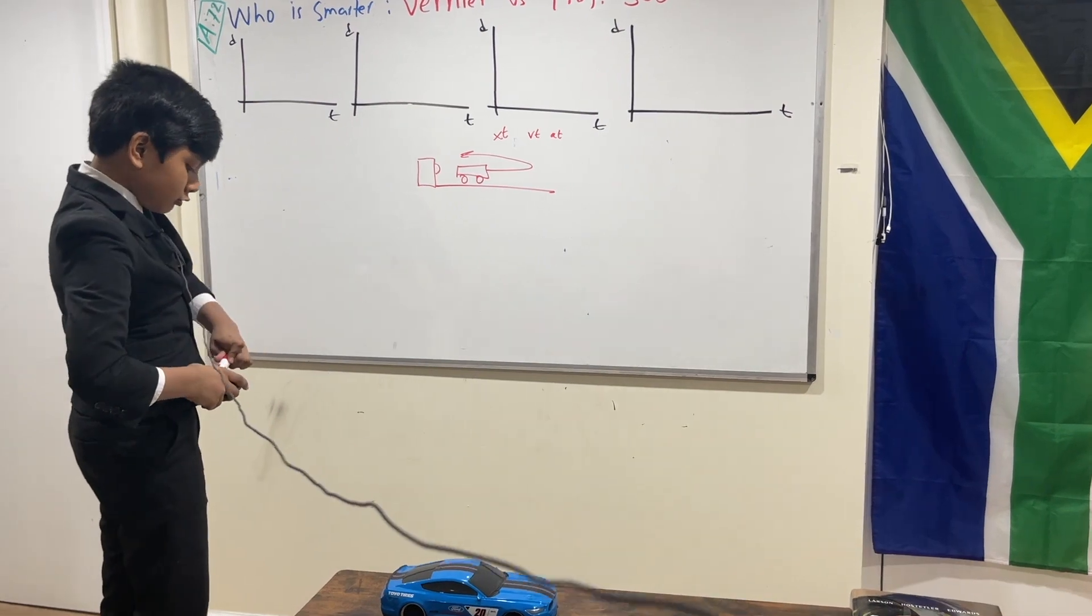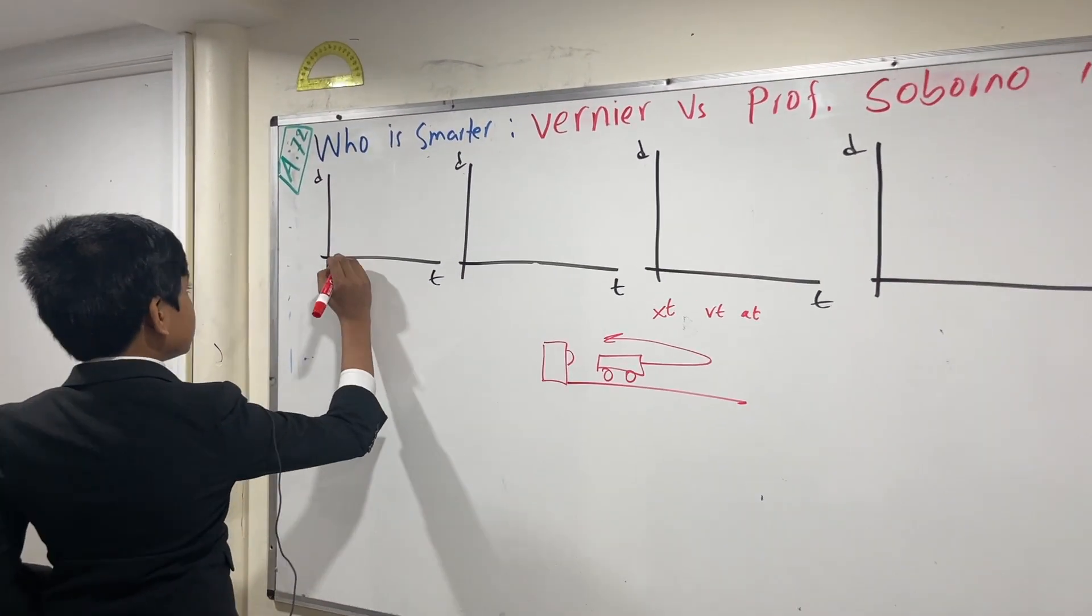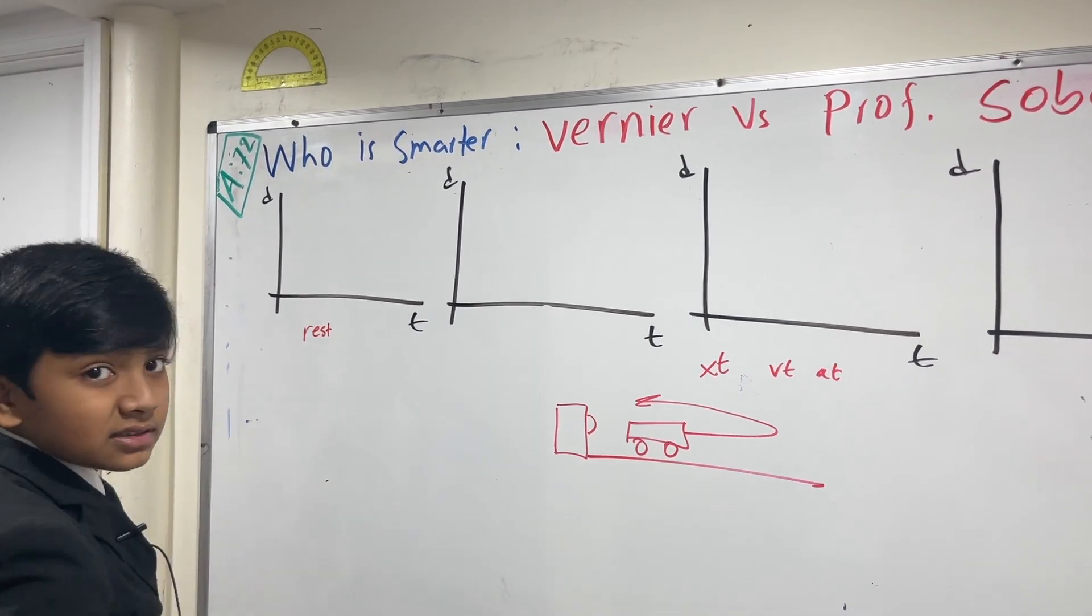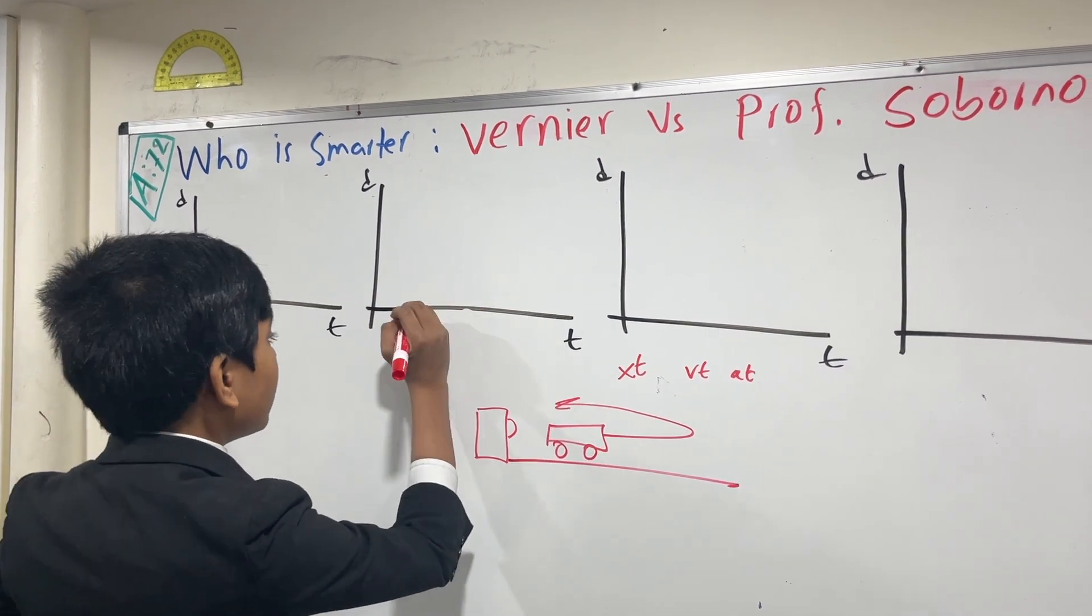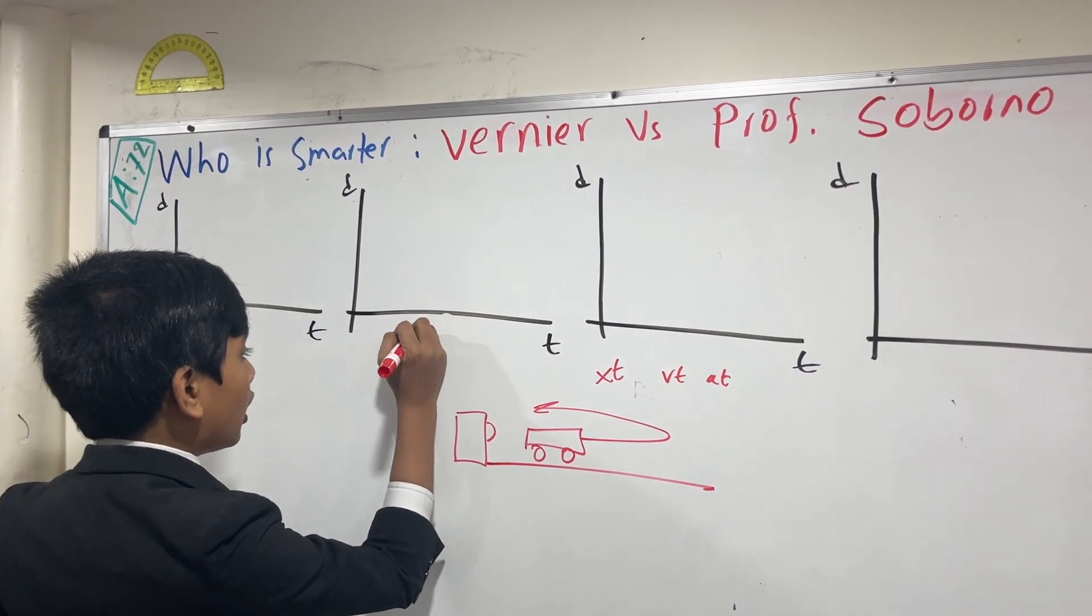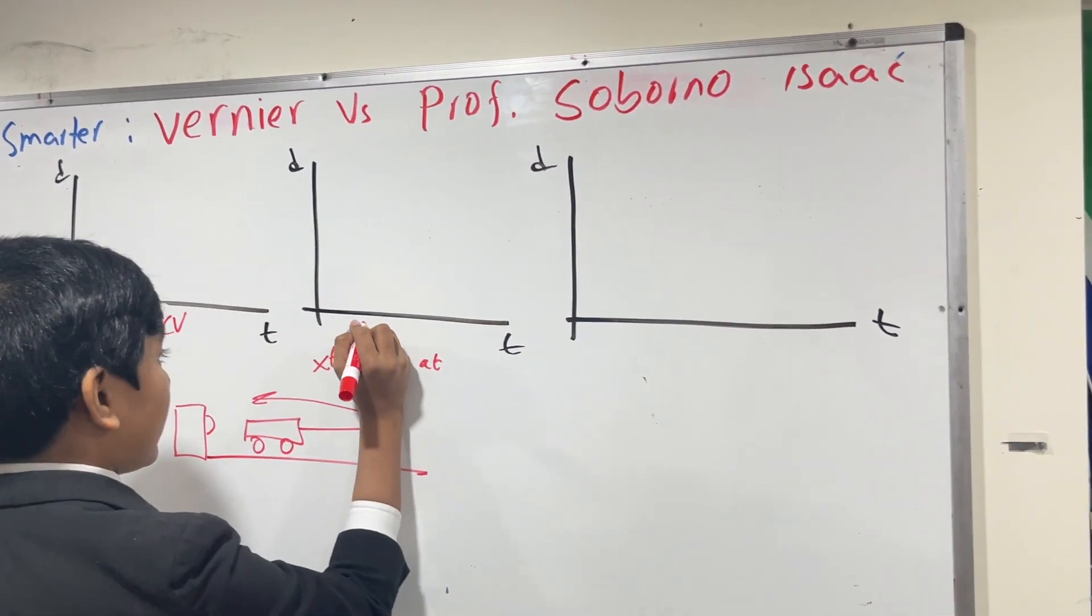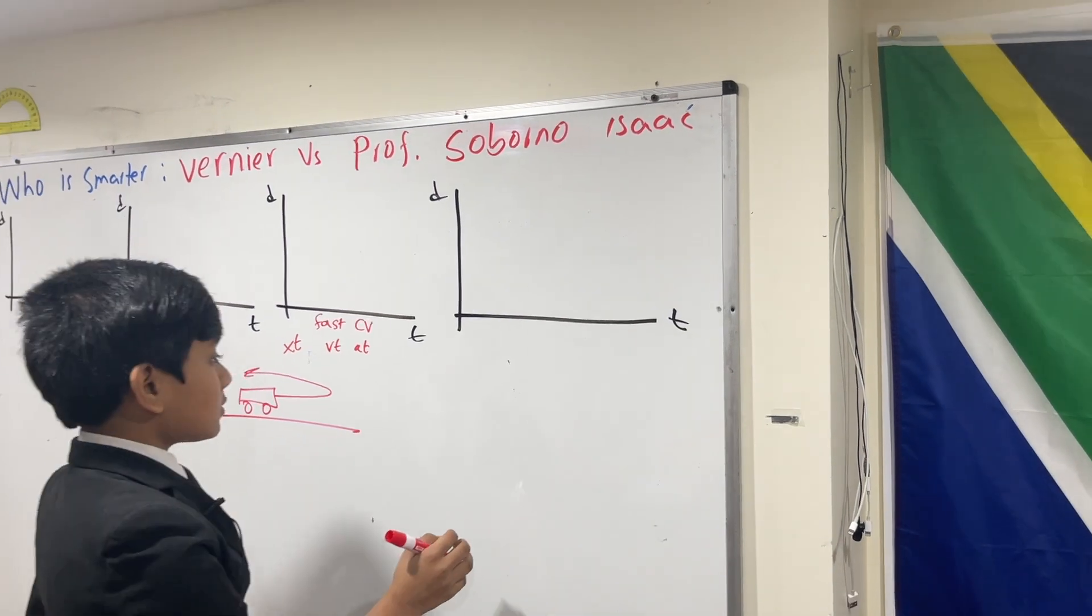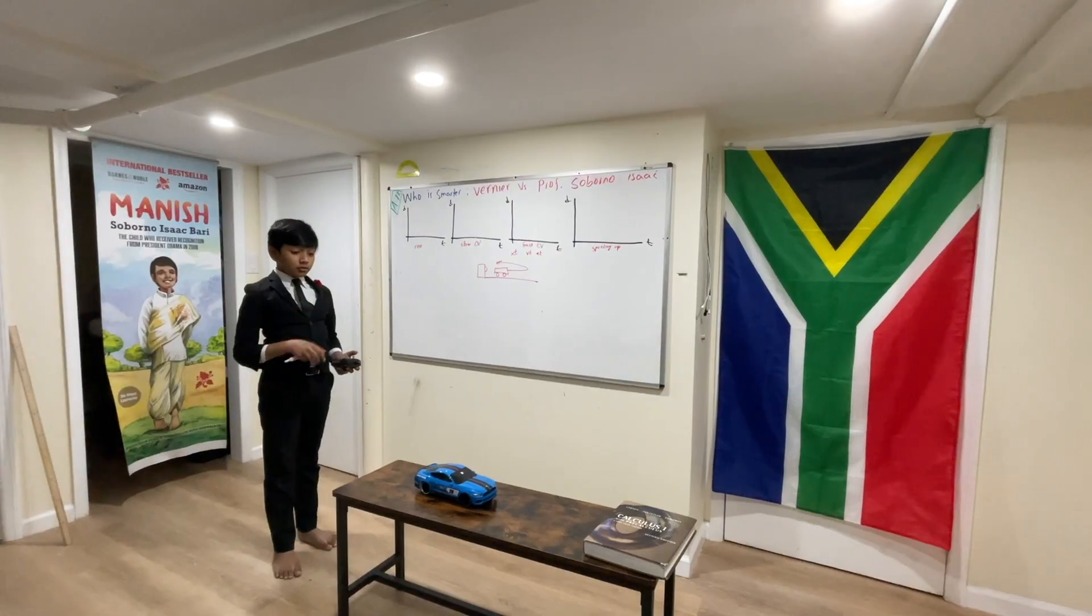So the first thing I'm going to do is test it with XT graphs. So we've got this one, I'm just going to lay it at rest. For this one, I'm going to draw it at a very slow, constant velocity. This one, I'm going to draw it at a fast, constant velocity. And this one,